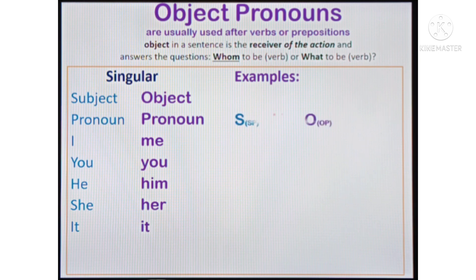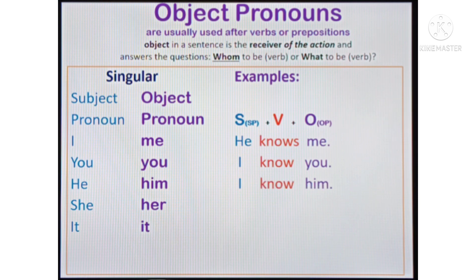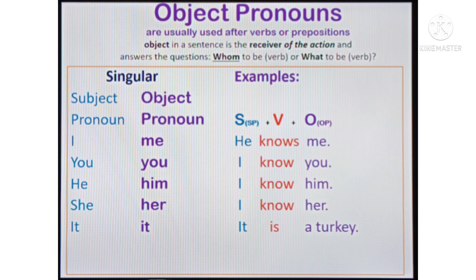Let's look at examples using the pattern: subject pronoun plus verb plus object pronoun. He knows me. I know you. I know him. I know her. It is a turkey. You are going to buy it.